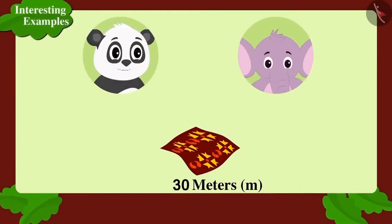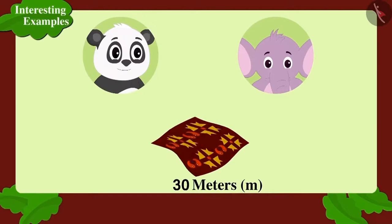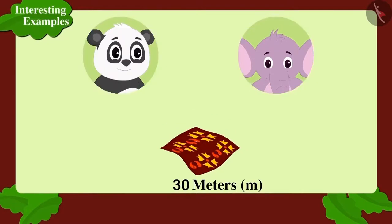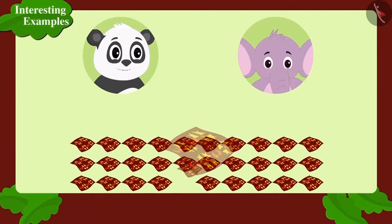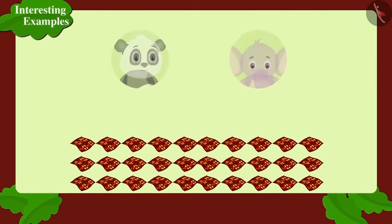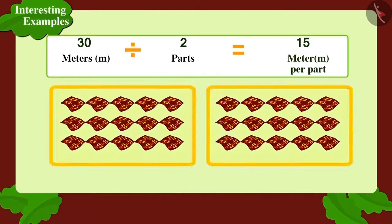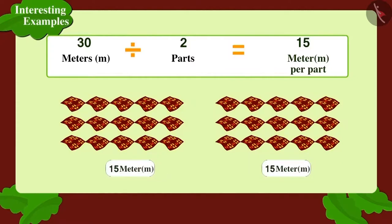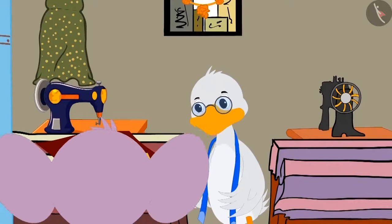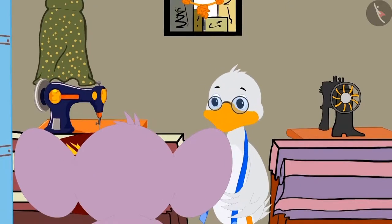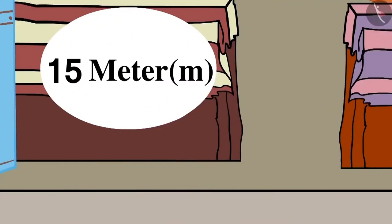Appu will have to divide that 30 meters of fabric into 2 equal parts. Suppose there are 30 meters of fabric of 1 meter each. If we divide 30 into 2 equal parts, how many meters will be there in each part? 15 meters! Appu turned towards Chacha's shop and got the fabric cut by Chacha into 2 parts of 15 meters each.